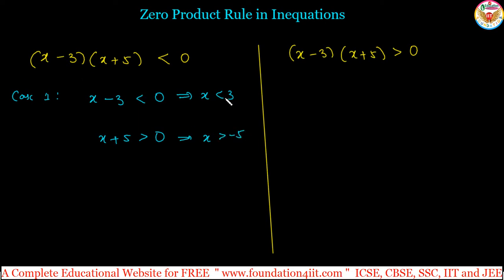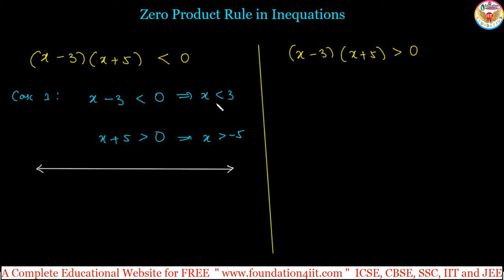So x is less than 3 and x is greater than minus 5. x less than 3 means values like 2, 1, 0, and so on, but x must also be greater than minus 5. On a number line, x less than 3 covers everything to the left of 3, and x greater than minus 5 covers everything to the right of minus 5. The common solution is in between minus 5 and 3.